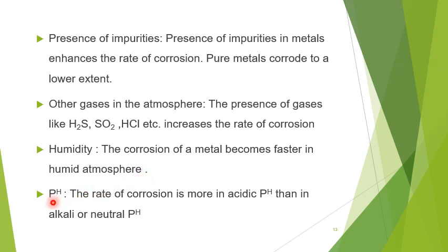Next, we discuss the effect of pH. The rate of corrosion is more in acidic pH than in alkaline or neutral pH. Metals present in acidic solutions get corroded easily. In acidic atmosphere the rate of corrosion is high, while in basic or neutral atmosphere the rate of corrosion is less.